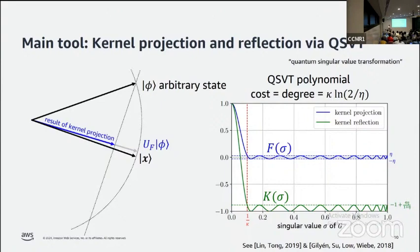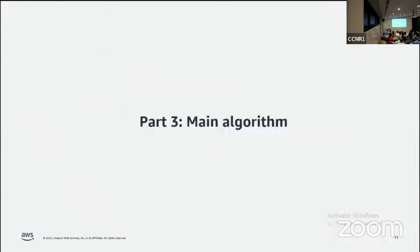If instead of applying the blue polynomial we apply the green polynomial, then instead of a projection we'll get an approximate reflection. That's because the portion of the state orthogonal to the kernel is going to be applied with a minus one phase instead of zeroing out. That's the main technical tool and now we're ready to move on to the main idea of the algorithm.